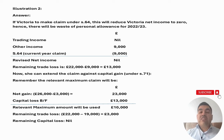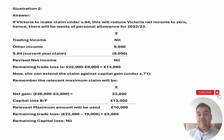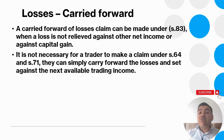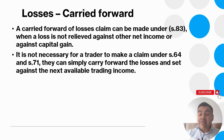Victoria has £22,000 trading loss: £9,000 set against other income, £10,000 set against capital gain under s71, leaving £3,000 trading loss to be carried forward. The remaining capital loss carried forward will be nil. A trader doesn't have to make a claim under s64 — they can ignore it. Under s83, a carry-forward claim can be made. When a loss is not relieved against net income or capital gains, it is not necessary to make an s64 or s71 claim.